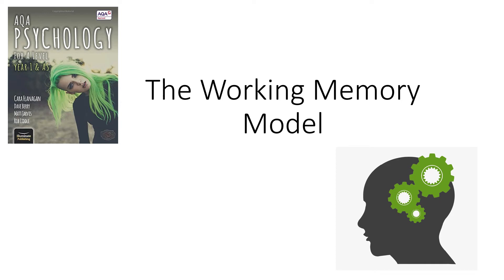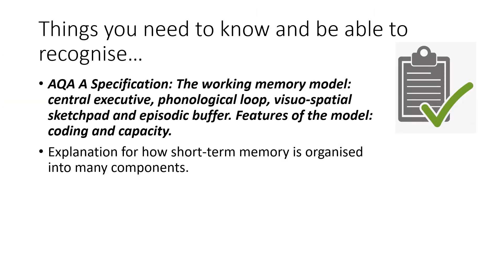Today we'll be looking at the working memory model, following along with the AQA Psychology textbook for A Level Year 1 and AS. The things you need to know and be able to recognise: your specification point is the working memory model, central executive, phonological loop, visuospatial sketchpad and episodic buffer, features of the model, coding and capacity.